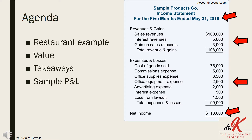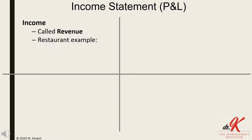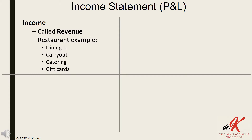A P&L is a profit and loss statement, also called an income statement. We'll walk through the two high-level categories of a P&L from the perspective of a restaurant manager. First, income is called revenue. Examples of revenue categories on an income statement are dining-in, carry-out, catering, and gift cards.